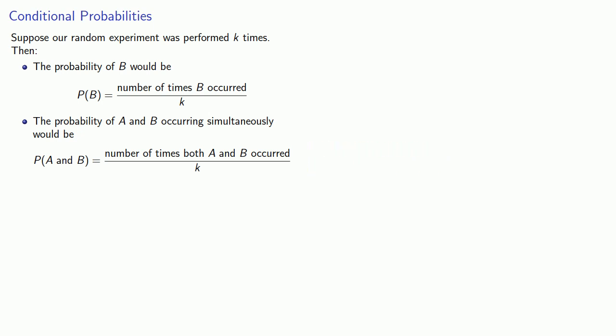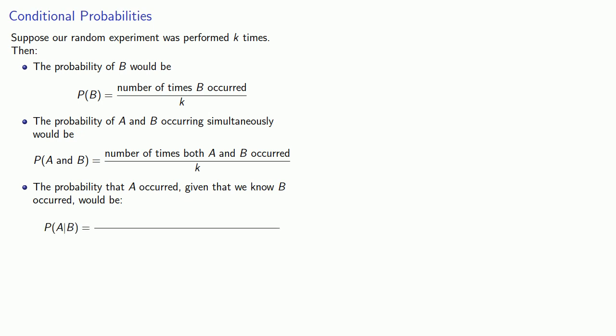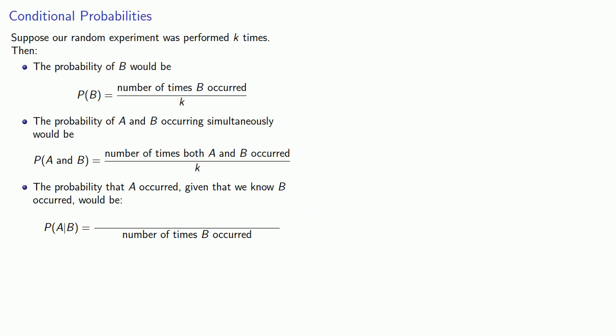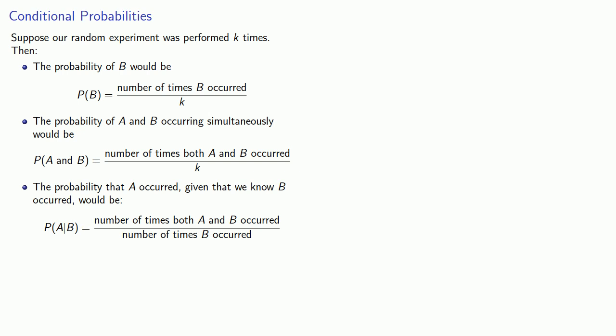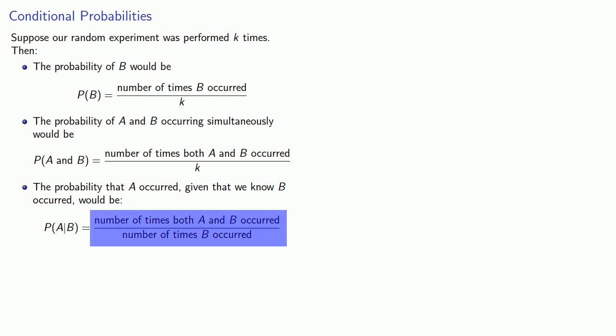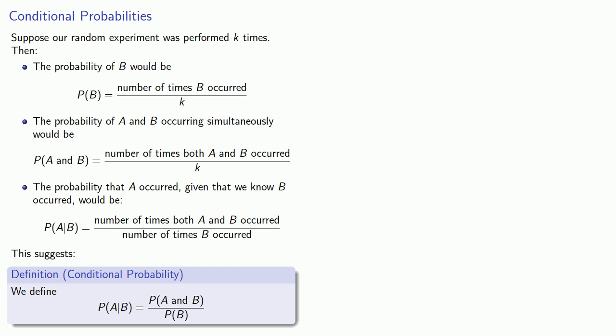Let's take a look at the conditional probability — the probability that A occurred given that we know B occurred. This is a little more complicated. Since we know that B occurred, we can focus on the number of times that B occurred, and of those times we're interested in the number of times both A and B occurred. If we divide the probability of A and B by the probability of B, the divisor k drops out and we get the conditional probability of A given B. This suggests we can define the conditional probability of A given B as the quotient of the probability of both A and B and the probability of B.